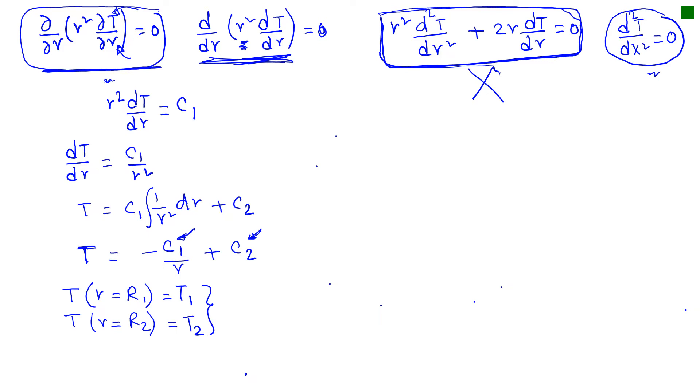So we will use these two equations to find C1 and C2. So if we plug in the first one then we get T1 is equal to minus C1 over R1 plus C2 and T2 equal to minus C1 over R2 plus C2.